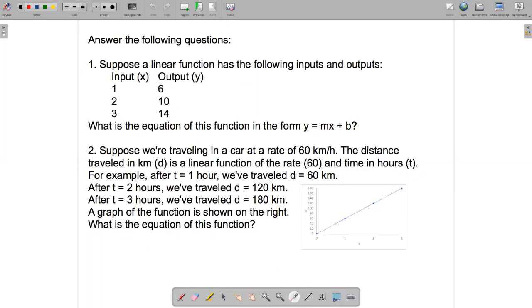Second question is a word problem. Suppose we're traveling in a car at a rate of 60 kilometers an hour. The distance traveled in kilometers, which we'll call d, is a linear function of the rate, 60, and the time in hours, which we'll call t. For example, after t equals 1 hour, we've traveled d equals 60 kilometers. And I've put that on this graph here. When t is on the horizontal axis, t is 1, d is 60. d is on the vertical axis. After t equals 2 hours, we've traveled d equals 120 kilometers. And after t equals 3 hours, we've traveled 180 kilometers. What is the equation of this function representing this line here? It's going to have t in it. It's going to have d in it. And it's going to have one or two numbers.